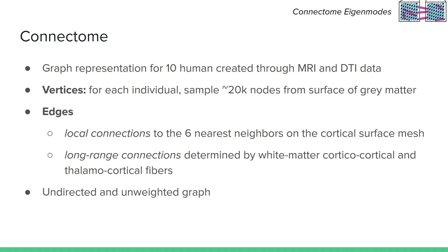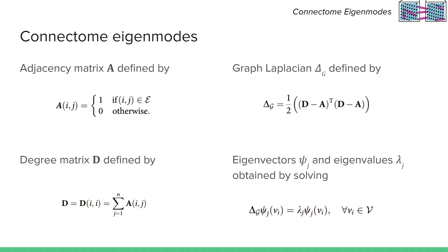Next, we have the definitions of the matrices used in the paper. First, the adjacency matrix is defined as usual: in the entry with coordinates i, j, there will be a 1 if vertex i is connected to vertex j by an edge, and 0 otherwise. The degree matrix is also defined as usual — filled with zeros with the exception of the main diagonal, where the i-th entry contains the degree of vertex i. The graph Laplacian is defined in this paper, and to get the eigenmodes of this graph Laplacian, we solve the corresponding eigenvalue problem. The obtained eigenvectors may be named either eigenfunctions or connectome harmonics.